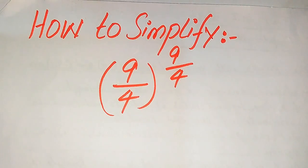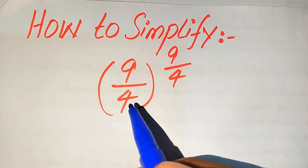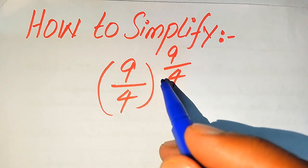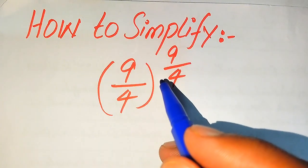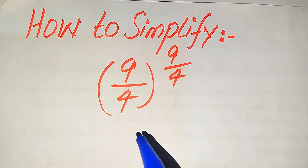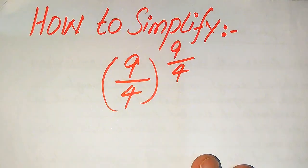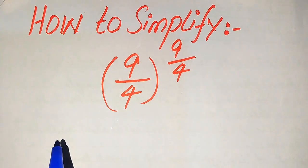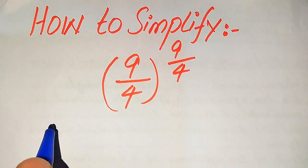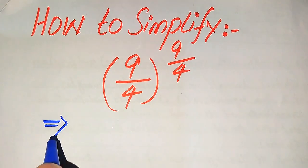Hello everyone. How to simplify this algebraic expression: we have 9 divided by 4, and its whole exponent is also 9 divided by 4. A calculator is not allowed, so we need to show all of the working on paper. We'll solve this problem step by step. If you have any other method in mind, please write it in the comment section.